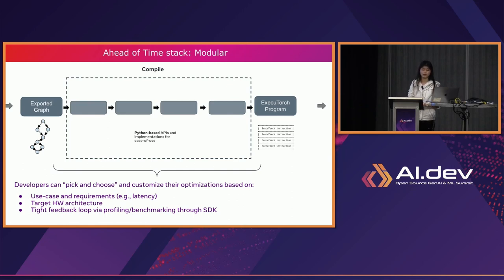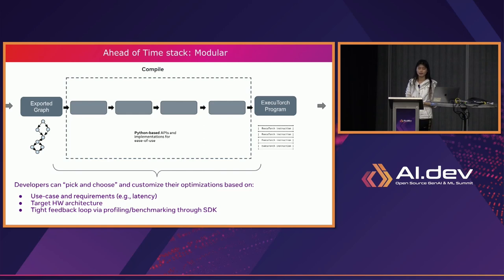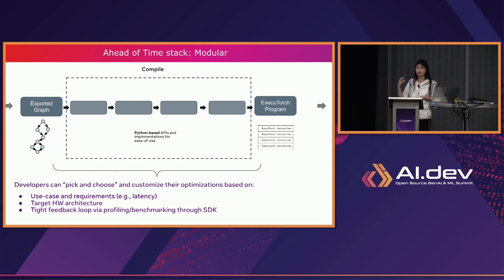By leveraging the ExecuTorch SDK — we also provide a native support SDK — we can provide a tight feedback loop including profiling and benchmarking. For example, if we observe that a linear operator is super slow on device and identify it as a bottleneck, we can leverage the SDK to recognize it and further optimize it.